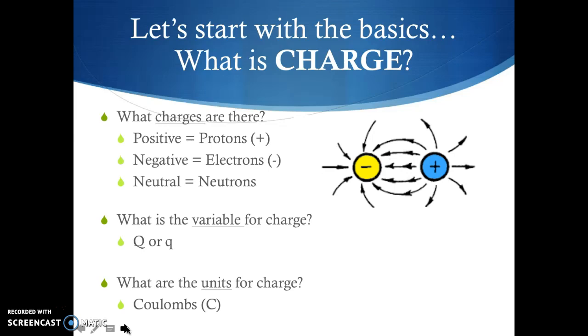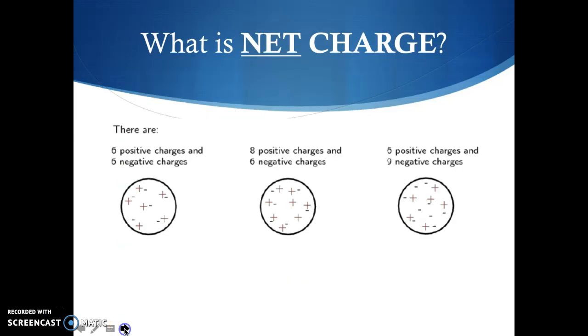The units for charge are going to be Coulombs or a capital C. So in physics, we can have just one positive charge, one negative charge, an isolated proton or electron, but more often than not we're going to talk about net charges or a combination of charges. For example, you have kind of this sphere on the far left that has six positive charges, so it must mean six protons and six negative or six electrons. So the net charge of this object would be, you guessed it, a net neutral charge.